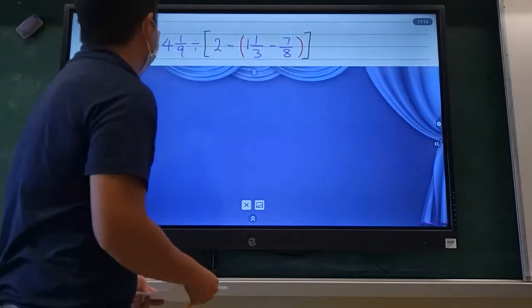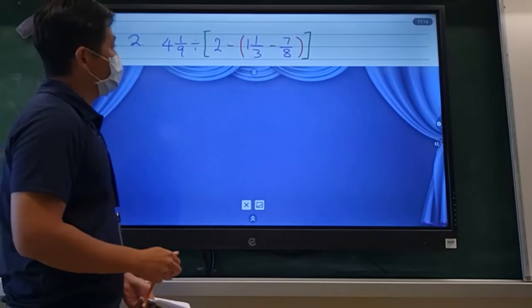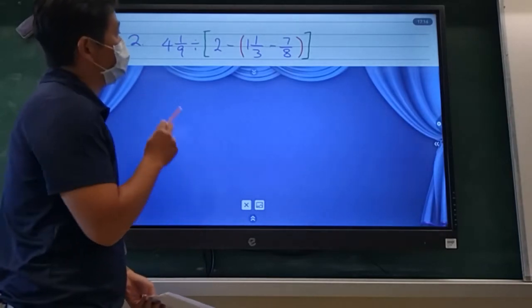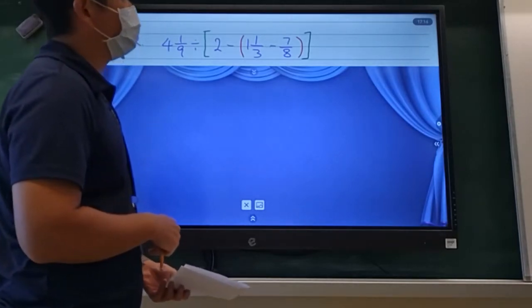All right, second question. 4 and 1/9 divided by square bracket, 2 minus round bracket, 1 and 1/3 minus 7/8.